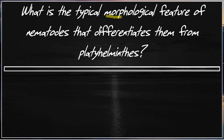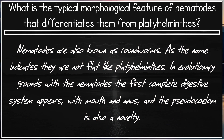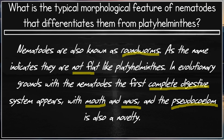What is the typical morphological feature of Nematodes that differentiates them from Platyhelminthes? Nematodes are also known as roundworms. As the name indicates, they are not flat like Platyhelminthes. In evolutionary terms, with the Nematodes, the first complete digestive system appears, with the mouth and the anus. The pseudocoelom is also a novelty.